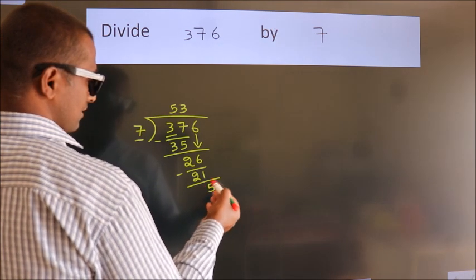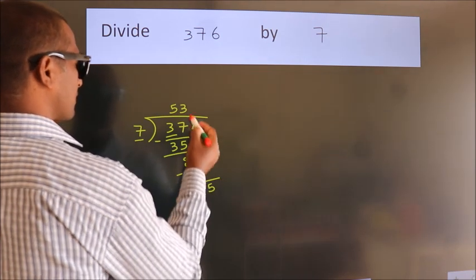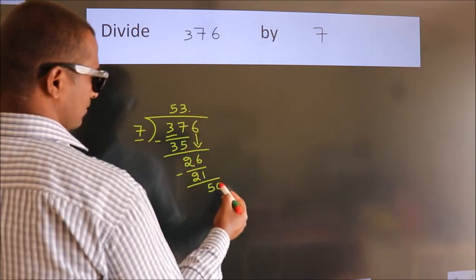After this, no more numbers to bring down. So what we do is we put dot, take 0. So 50.